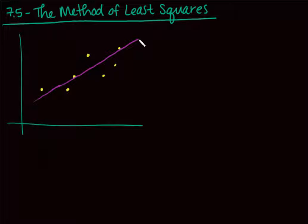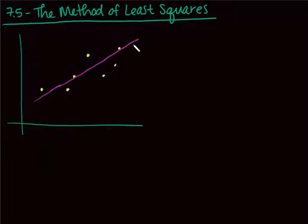We know the slope of lines easily. We can predict trends with them — for example, increasing by so many students a month if we're looking at college enrollment. So this line isn't perfect, because there's some difference between the actual points the line gives me and the actual data points I'm looking at.